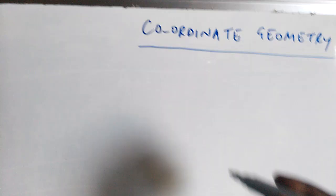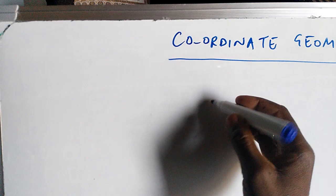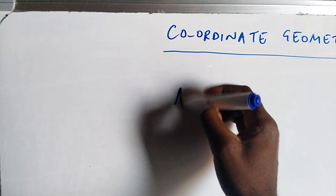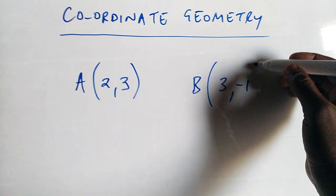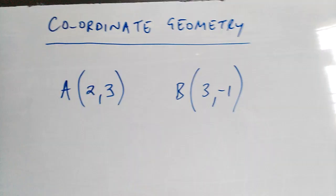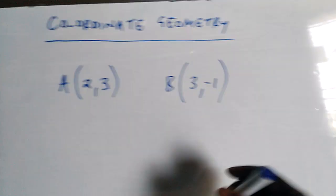We say a line is the joining of two or more coordinates. Suppose A is (2, 3) and B is (3, -1).